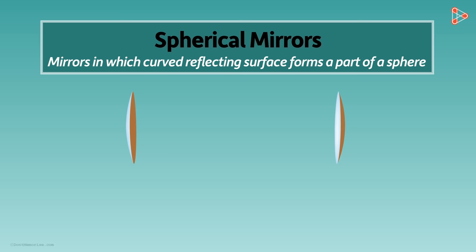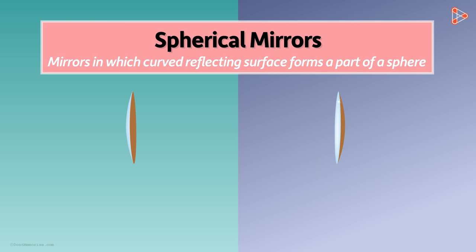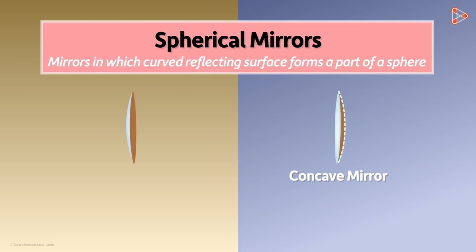Spherical mirrors can be of two types. One in which the reflecting surface is curved inwards — they are called concave mirrors. And the others in which the reflecting surface is curved outwards — they are called convex mirrors.